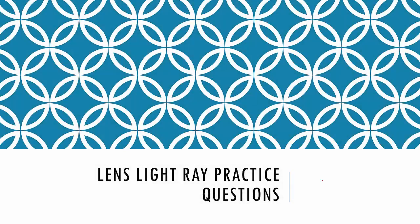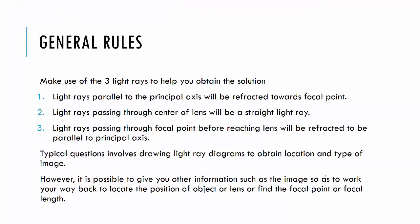For this lesson, we will be doing some lens light ray practice questions. There are some general rules. We make use of three light rays to obtain the solution. The first light ray is parallel to the principal axis and will be refracted towards the focal point. The second light ray passes through the center of a lens and will be a straight light ray. The third light ray passes through a focal point before reaching the lens and will be refracted parallel to the principal axis.